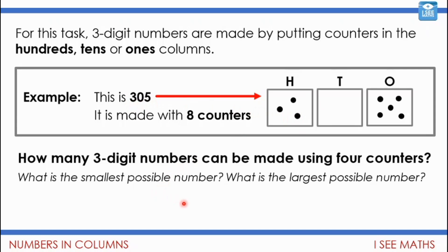How many three-digit numbers can be made using four counters, though? That's your challenge. This isn't an answer to that. This one has eight counters. It's just an example. But how many different three-digit numbers can be made using four counters? So what's the smallest number that can be made? And what's the largest number that can be made? And how many answers can you find? So here is your problem-solving task today. Pause the video, and you get stuck right into it.